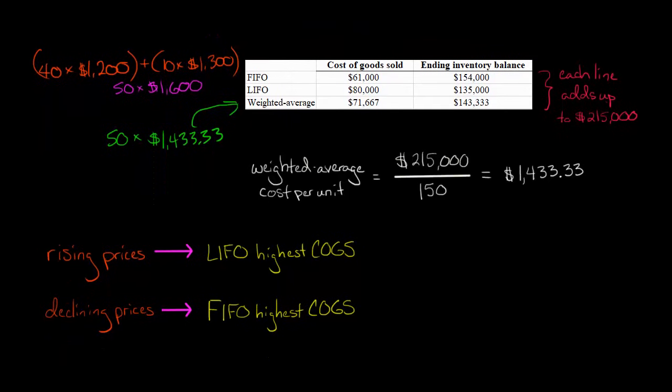So remember, this is important. When you have rising prices, which was the example that we had here, the prices were going up and up over time, LIFO is going to result in the highest cost of goods sold, and therefore also the lowest net income.